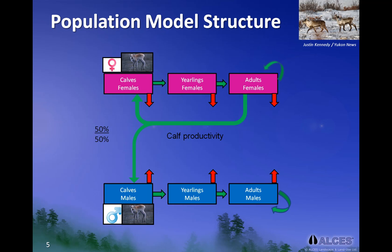To turn this simple conceptual model into a working model, we would need to estimate the number of animals within each stock, estimate rates of birth, death, and survival for each of the green and red arrows. The final steps would be to link the stocks and flows over a defined time period — usually a year — and write out the relationships between stocks and flows using mathematical equations. We typically need to use a computer to track and calculate all of the various equations, inputs, and outputs.